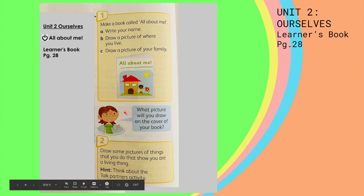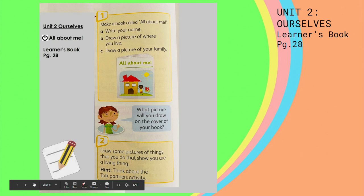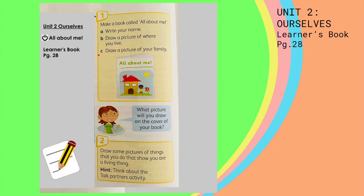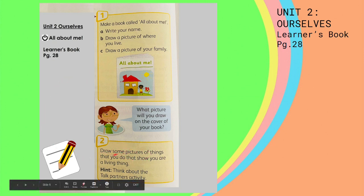What picture will you draw on the cover of your book? You have to write your name, draw a picture of where you live, and draw a picture of your family. Then draw some pictures of things that you do that show you are a living thing. Remember to think about the talk partners activity we did before this.